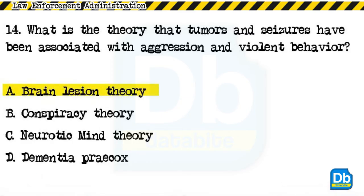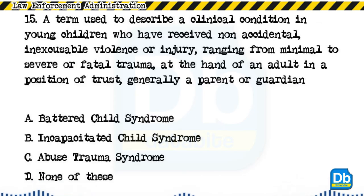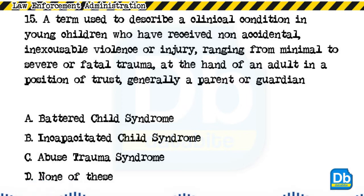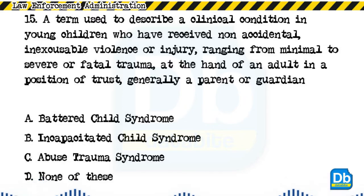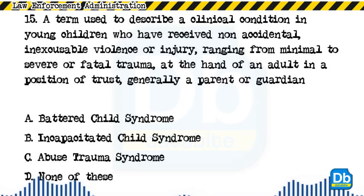The answer is A, brain lesion theory. Question 15: A term used to describe a clinical condition in young children who have received non-accidental, inexcusable violence or injury ranging from minimal to severe or fatal trauma at the hand of an adult in a position of trust, generally a parent or guardian: a) battered child syndrome, b) incapacitated child syndrome, c) abuse trauma syndrome, d) none of these.